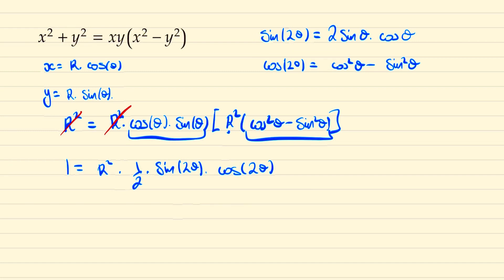And once more we can apply the double angle formula on sine 2 theta cos 2 theta. So this is the same thing as writing it as a half sine 4 theta. So thus we have that r squared is equal to 4 over sine 4 theta.